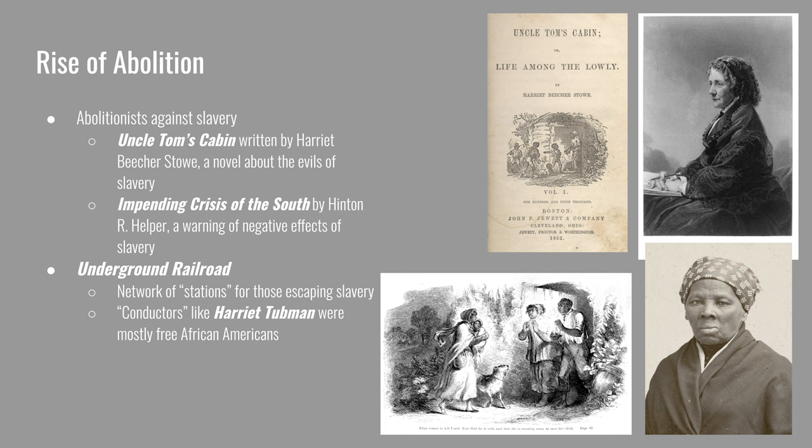Another book published during this time was The Impending Crisis of the South by Hinton R. Helper. It used an economic argument against slavery, writing that basing the South's export agricultural economy on slavery would be detrimental because the cost of land and enslaved labor would continue to rise while the price of cash crops would fall. So basing their economic system on slavery was keeping the South from developing. Helper pointed to the lack of large cities in the South and a smaller white population compared to the North — only 5.5 million people.